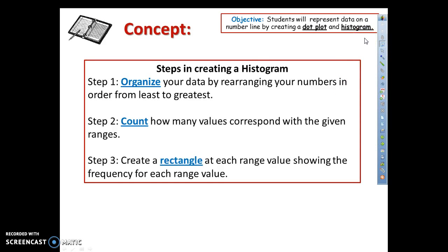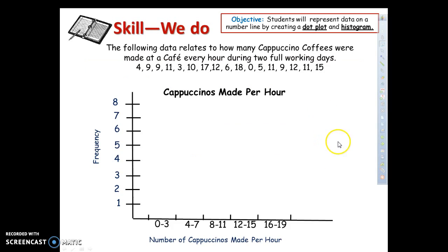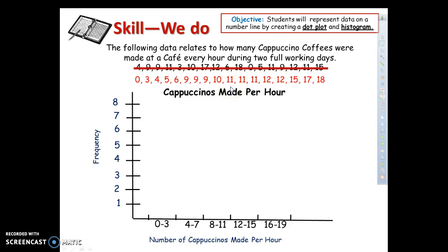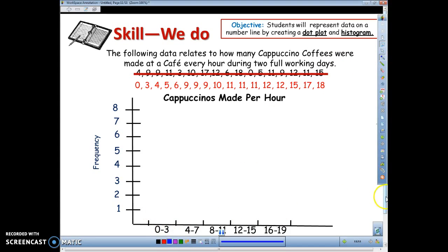Now let's create a histogram. Step 1: organize the data by rearranging numbers from least to greatest, just like dot plots. Step 2: count how many values fall within each interval range. Step 3: create a rectangle for each interval with a height equal to the frequency. We have data showing how many cappuccino coffees were made at a cafe every hour during two full workdays. After rearranging from least to greatest, our intervals are: 0 to 3, 4 to 7, 8 to 11, 12 to 15, and 16 to 19.